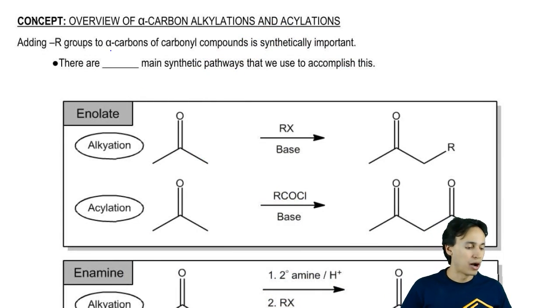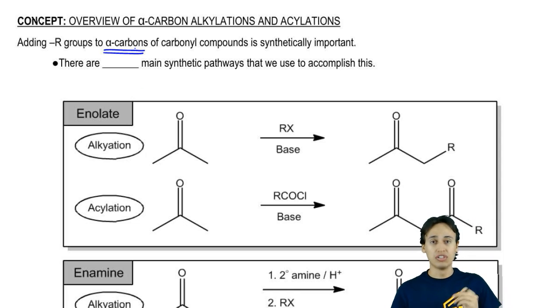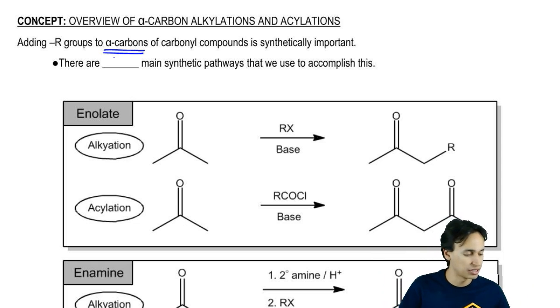Adding R groups to alpha carbons turns out to be very important synthetically. There's a lot of reasons that we would want to add an R group to an alpha carbon. It turns out that if we want to do that, we're not limited by techniques. There's actually three different reactions that all do this. We'll just write down the number three.